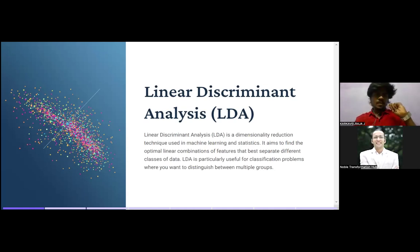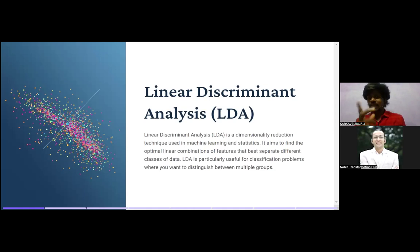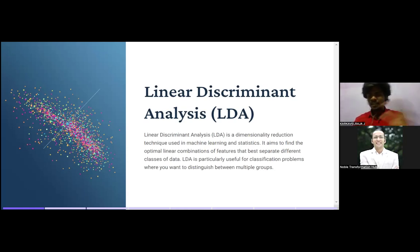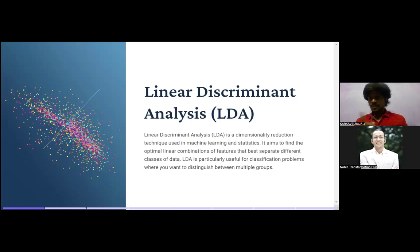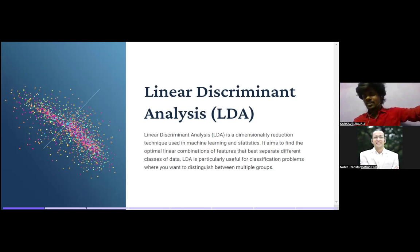Let's say I need to predict whether a person has heart disease or not based on different features — consider I have nearly a thousand features: glucose level, blood pressure level, gender, eating habits, and so on. I'm going to predict whether the person has heart disease using those thousand columns. Now I'm going to convert this high-dimensional data of a thousand columns to only 10 columns, such that those 10 columns can represent all the other thousand columns.